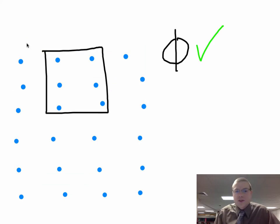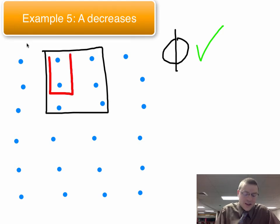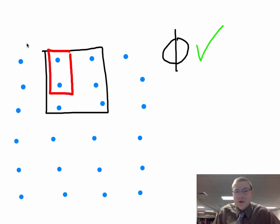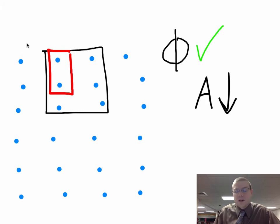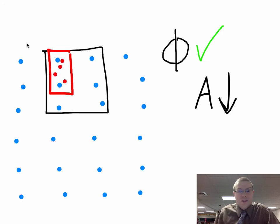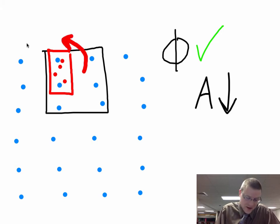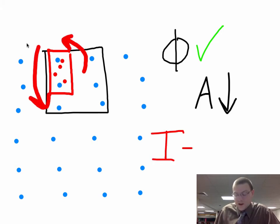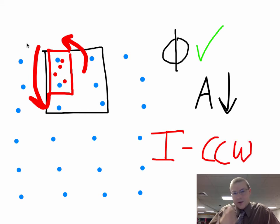Another way to change flux is to shrink the area. If the area of the loop shrinks down, it used to hold six magnetic field dots and now it only holds two. That loop is going to want to create its own magnetic field to maintain the flux. The area shrunk, so the magnetic flux changed, and any time there's a change in magnetic flux we expect an induced current. So that loop sends its own magnetic field back out of the page, meaning current flows counterclockwise to throw dots out and maintain the old flux.